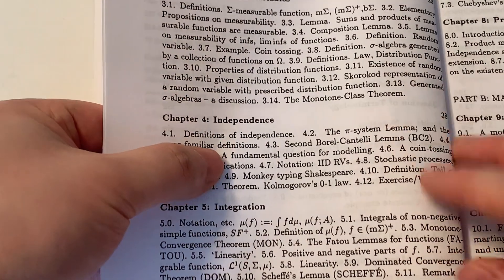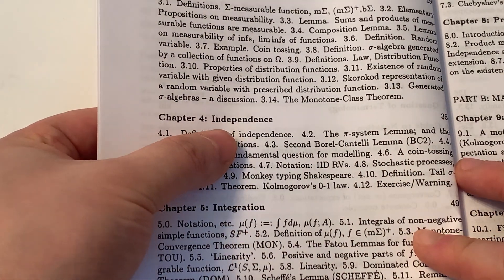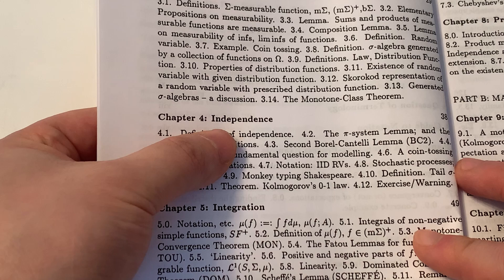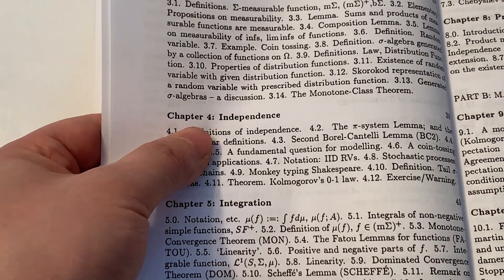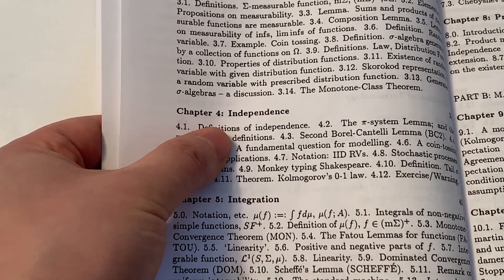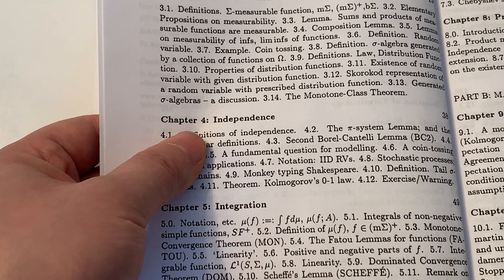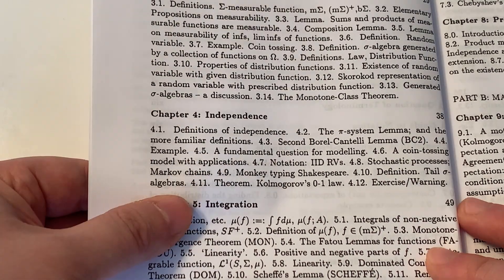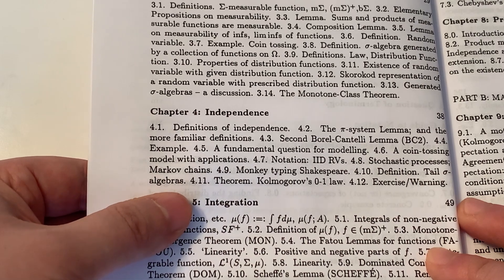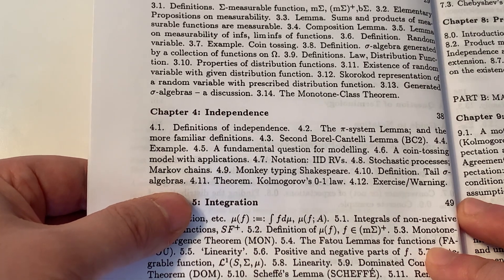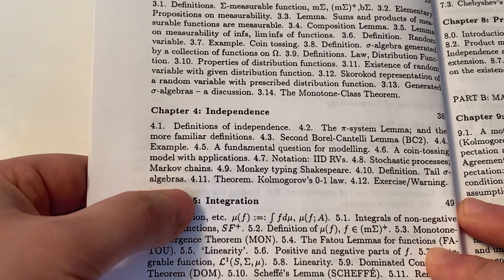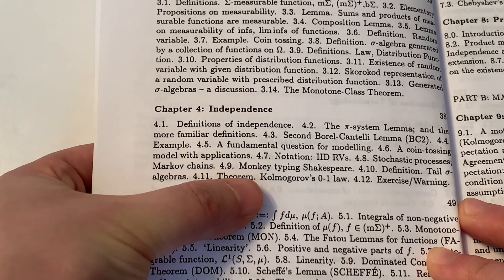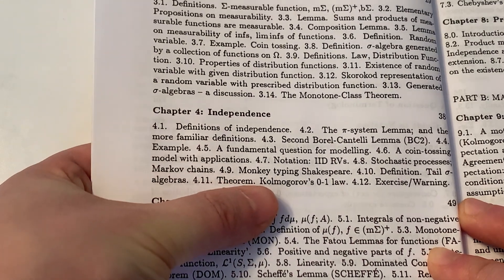Chapter 4 is on independence. So this is where probability theory distinguished itself from pure measure theory. This is a crucial notion because many interesting results relies on the notion of independence. For example, the central limit theorem, or at least the classical version of it. And here we finally see some of the major payoffs of introducing measures theory, other than the improved standard of rigor itself. There are some non-trivial results. For example, Kolmogorov 0-1 laws.